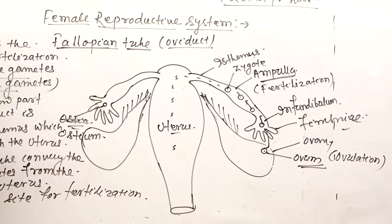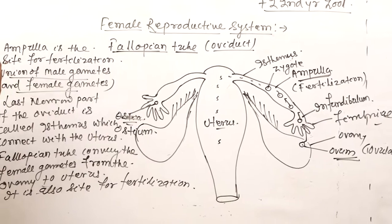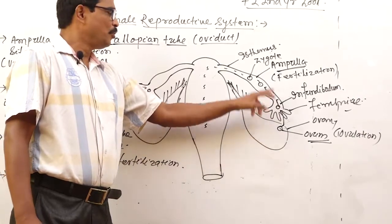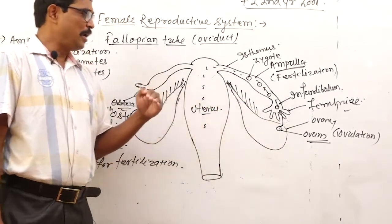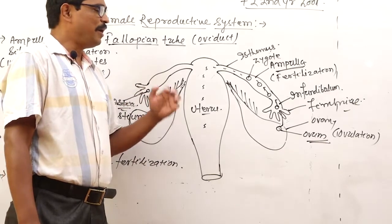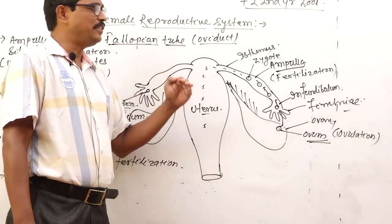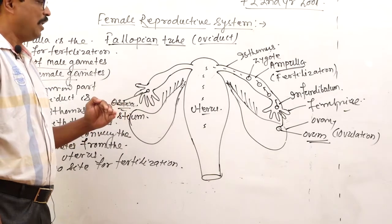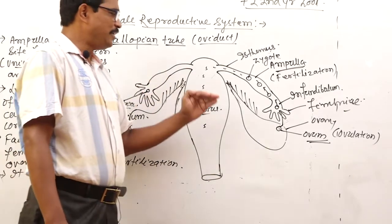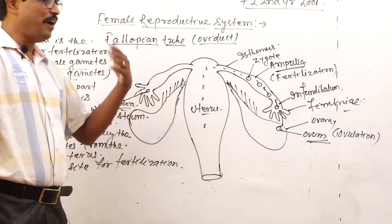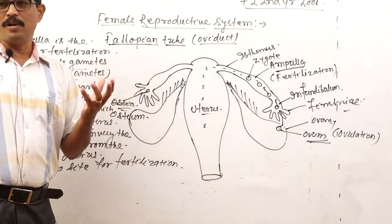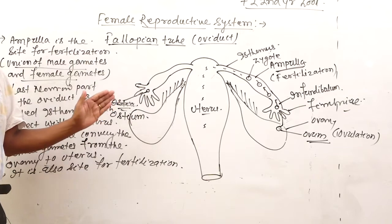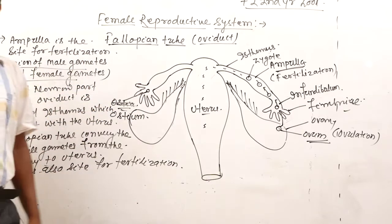The function of the entire fallopian tube is that it conveys the ovum from the ovary to the uterus, and it is also the site for fertilization of the ovum at the ampulla. After fertilization it forms the zygote, then the zygote divides and re-divides to form a multicellular structure called the morula. The morula moves towards the uterus, where it implants inside the uterus.